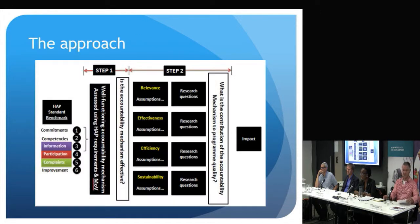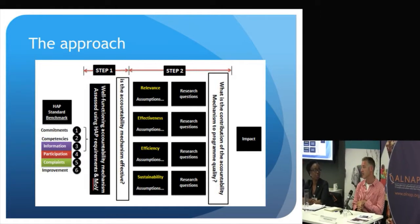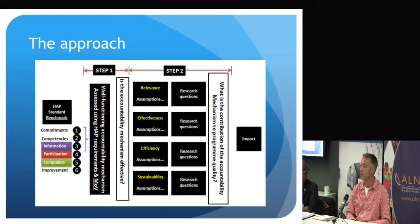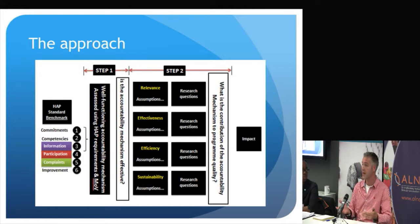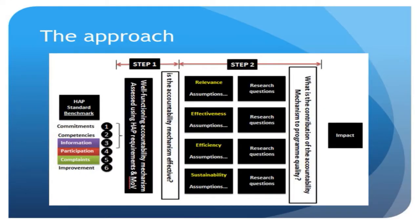In terms of how we did it, the approach had two stages. The key area of interest was in three HAP benchmarks — benchmarks three, four, and five. Benchmark three covers accountability mechanisms that firstly provide information about projects to people involved in them, secondly elicit the participation of people in projects, and thirdly offer recourse for people to raise complaints and get redress. We focused on those three HAP benchmarks, then spent time as a peer learning group brainstorming how those benchmarks contribute to improved quality.